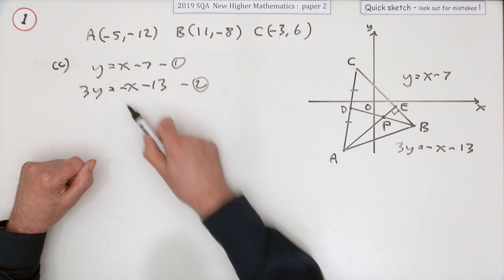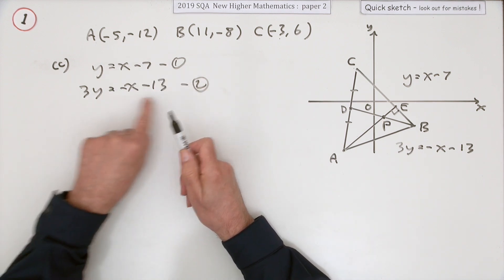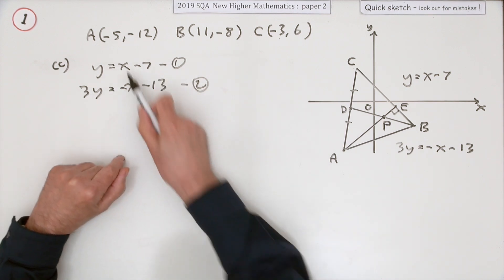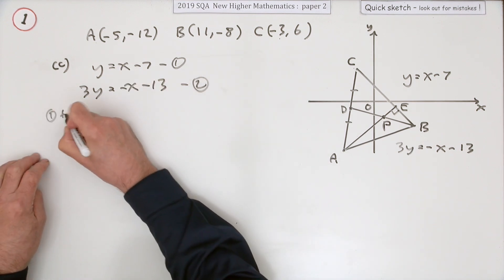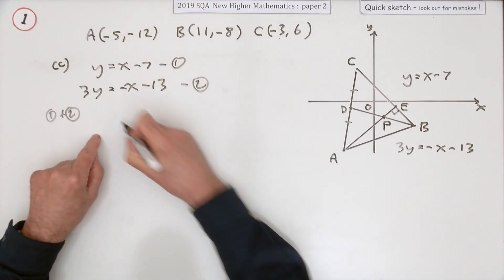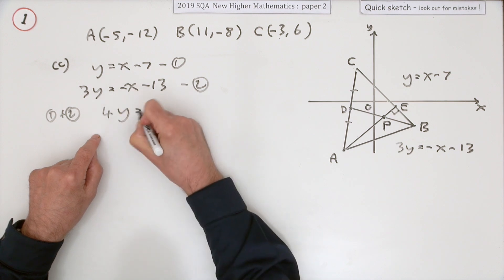Now normally I would have just used substitution all the time if one reads y equals, but they're ripe for elimination. They're already lining up with each other, the correct sort of terms together, and those have got opposite signs in the same coefficient. So simply doing 1 plus 2 will knock out those x's.